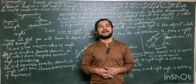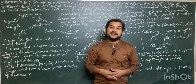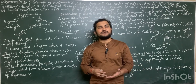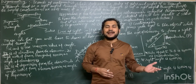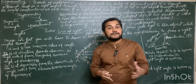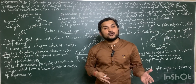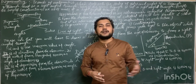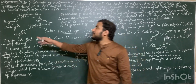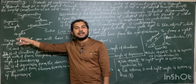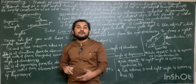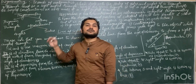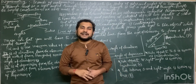Good morning, dear students. Welcome to Mathematical YouTube Channel. In this video we will know about a branch of mathematics which deals with the measurement of sides and angles of a triangle, and this branch is known as trigonometry. Trigonometry is made up of two Greek words: trigon and metron. The word trigon means triangle and metron means measurement.